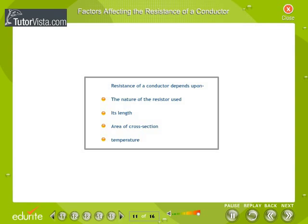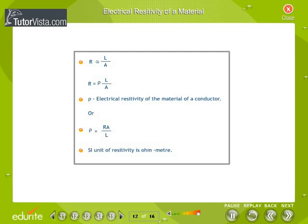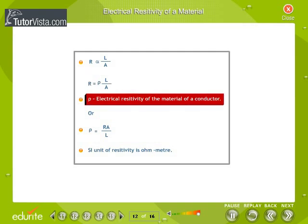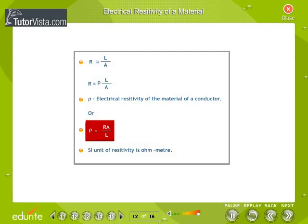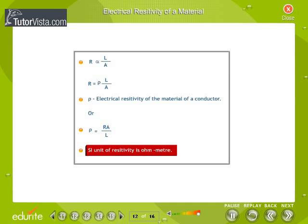Factors Affecting the Resistance of a Conductor: Resistance of a conductor depends upon the nature of the resistor used, its length, area of cross-section, and temperature. Electrical resistivity of a material: Precise measurements have shown that resistance of a uniform metallic conductor is directly proportional to its length L and inversely proportional to the area of cross-section A. That is, R directly proportional to L by A, or R equals Rho into L by A, where Rho is the constant of proportionality and is commonly known as the electrical resistivity of the material of a conductor. The unit of resistivity is ohm-meter.